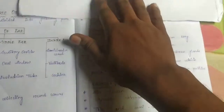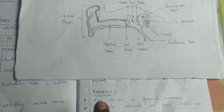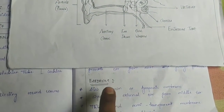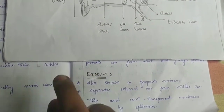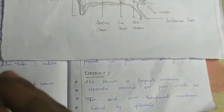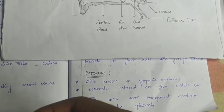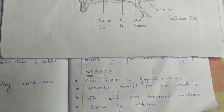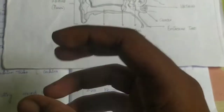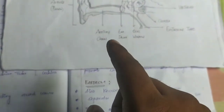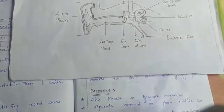The next part is the ear drum. The ear drum is a small oval-shaped structure, also called the tympanic membrane. It separates the external ear from the middle ear. It is a thin and semi-transparent membrane covered by epidermis. It causes sound waves to vibrate and passes them to the middle ear.